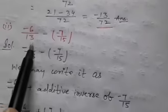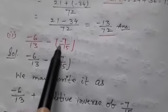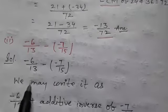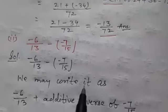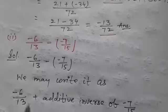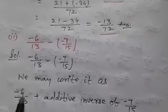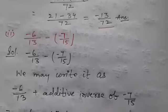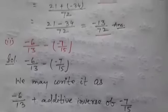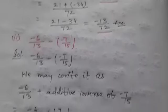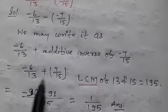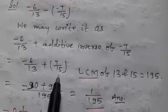Second is: −6/13 minus (−7/15). We may write it as −6/13 plus the additive inverse of −7/15, so we write −6/13 + 7/15.